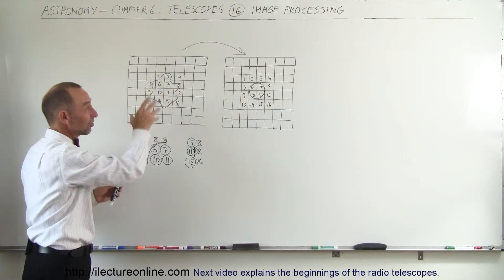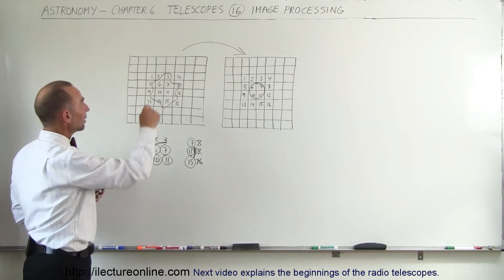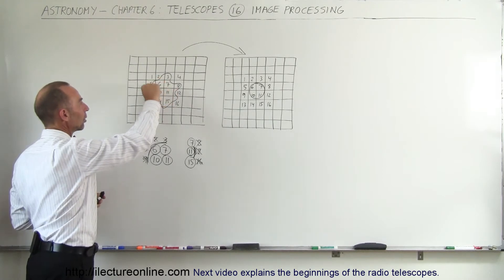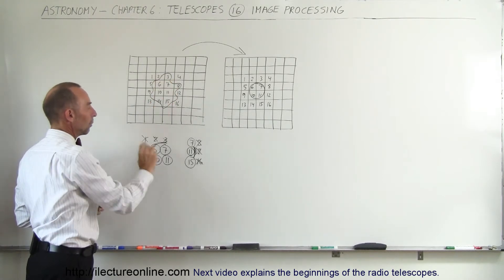Let's say we number our pixels, and here's just a small example. Let's say we take pixel number 6, that's our central pixel. We're going to look at all the pixels around number 6.